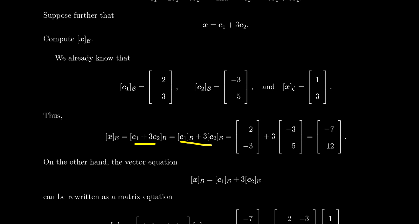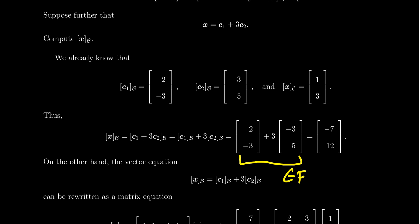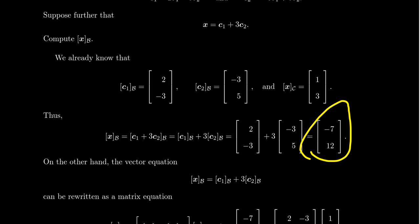So a linear combination inside of a coordinate vector relative to B becomes a linear combination of coordinate vectors: C1 plus 3C2 inside this coordinate vector relative to B becomes 1·[C1]_B plus 3·[C2]_B. Now [C1]_B is (2, -3) and [C2]_B is (-3, 5). This becomes a calculation in F²: 2 plus negative 9 is negative 7, and negative 3 plus 15 is 12. So this captures the coordinate vector of X relative to B. Since we knew X in C coordinates and the C vectors in B coordinates, we were able to transition from C coordinates to B coordinates for X.